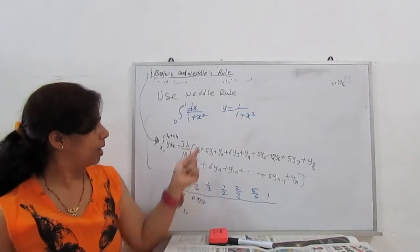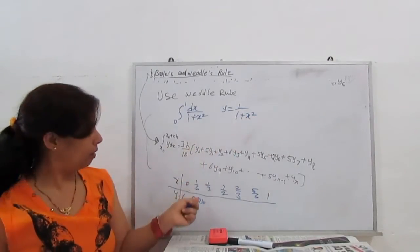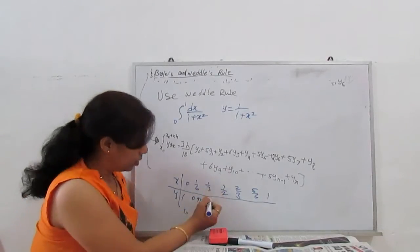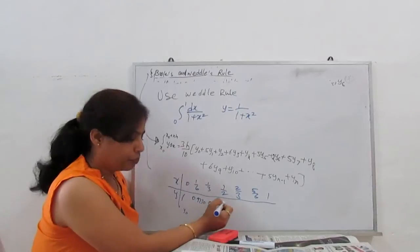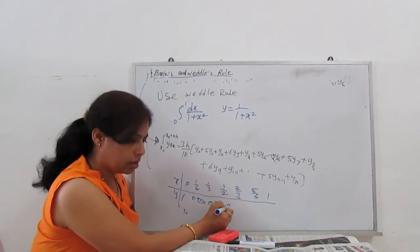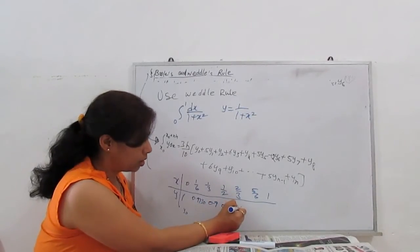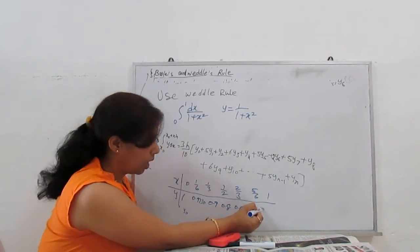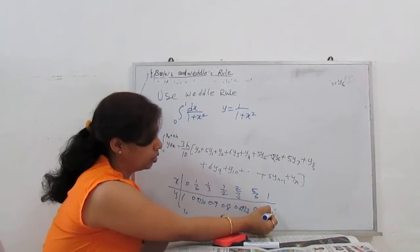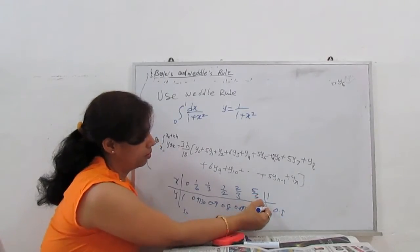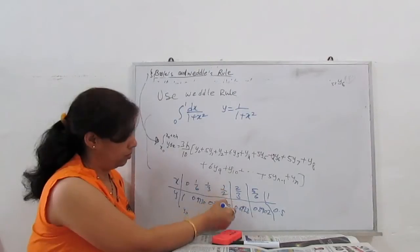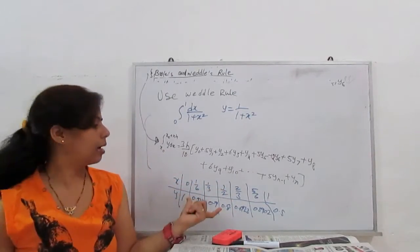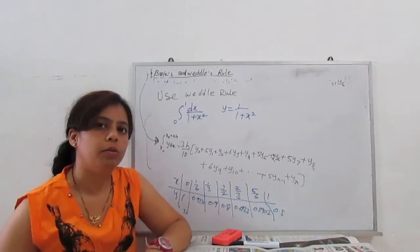Then 0.9, 0.8, 0.6923, 0.5902, and 0.5. So these are my values regarding x.